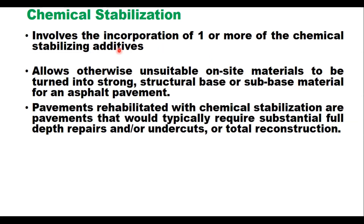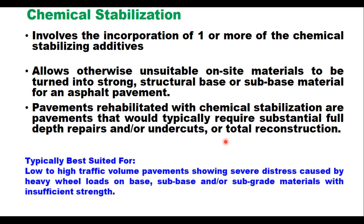Chemical stabilization involves the incorporation of one or more chemical stabilizing additives like Portland cement, lime, fly ash, calcium chloride, or any other blend or commercially available chemical stabilizer. There are several benefits: it allows otherwise unsuitable on-site materials to be turned into a strong structural base or sub-base material for an asphalt pavement. Pavements rehabilitated with chemical stabilization are those that would typically require substantial full depth repair, undercuts, or total reconstruction.